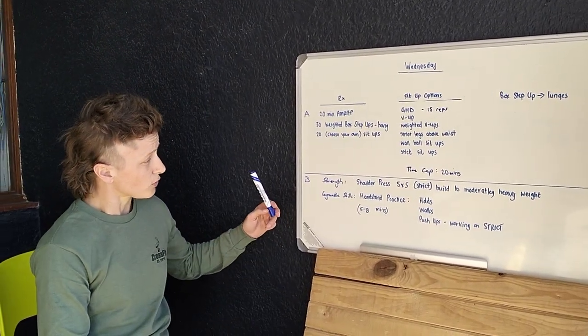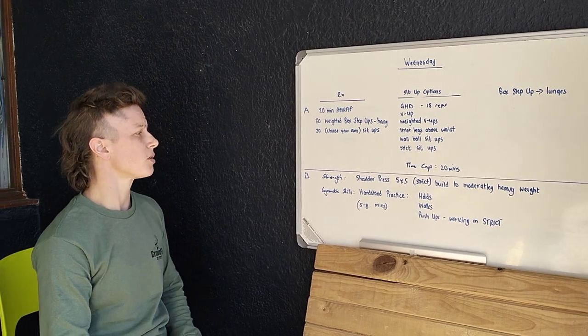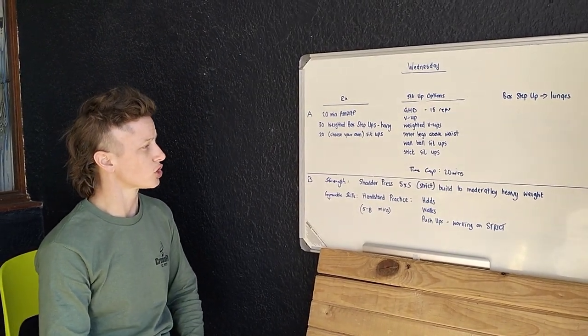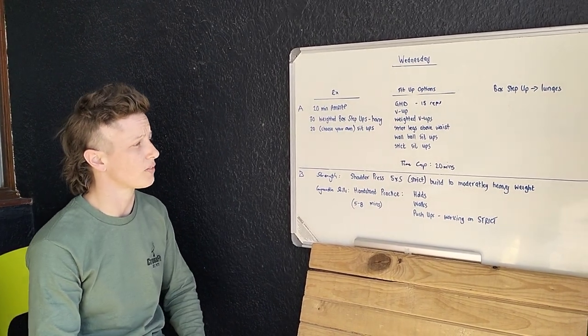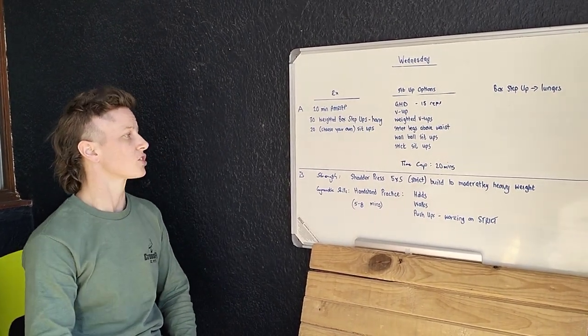After which, if you have the equipment at home or at the gym, we're going to work on some strict shoulder press. Sticking with that five times five, building to a moderately heavy weight.